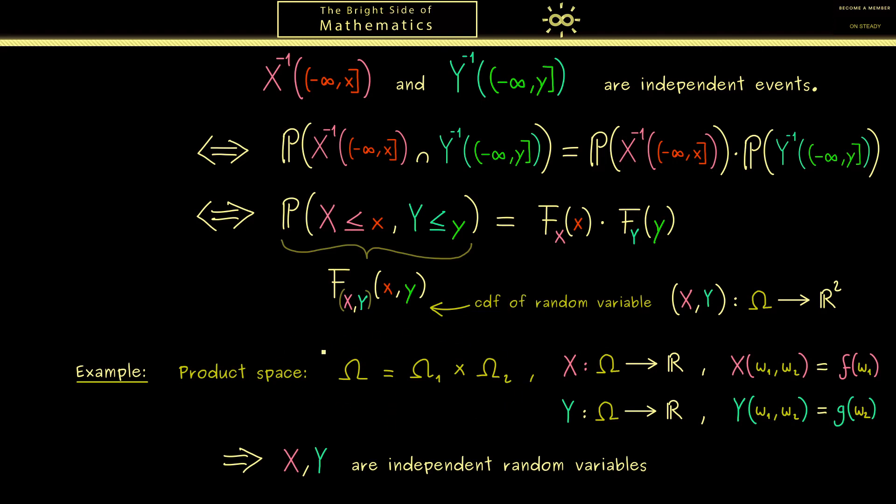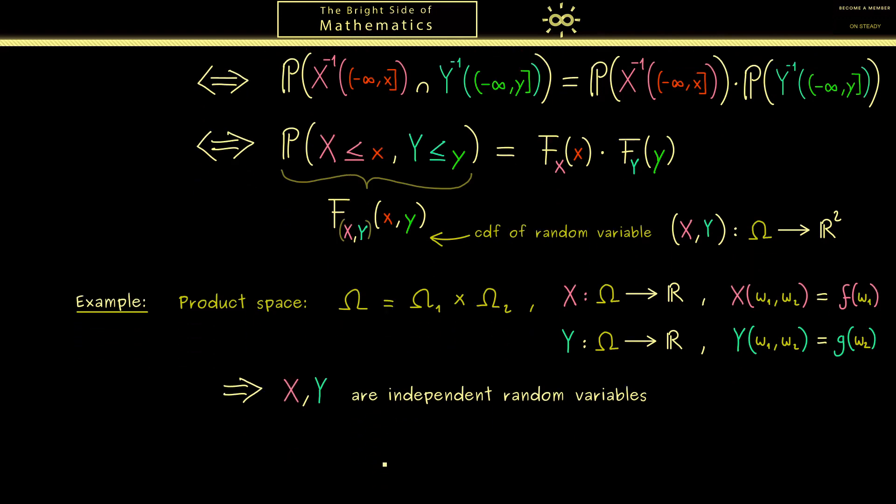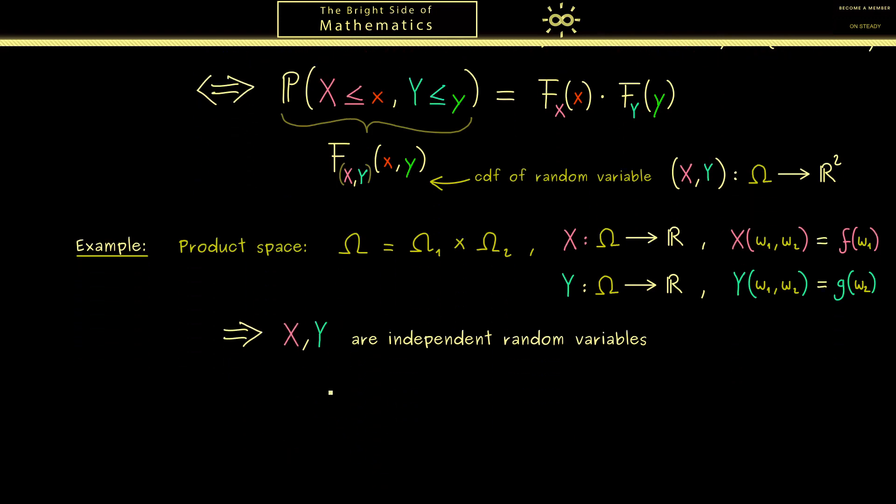Okay, now when you see this product space here you might remember that we also have a product space with infinitely many components. Therefore the notion of independence for infinitely many random variables might also be useful. Indeed this will be the last definition for this video. Now what we have is a whole family of random variables called X_i, where capital I could be any index set. For example it could be the natural numbers.